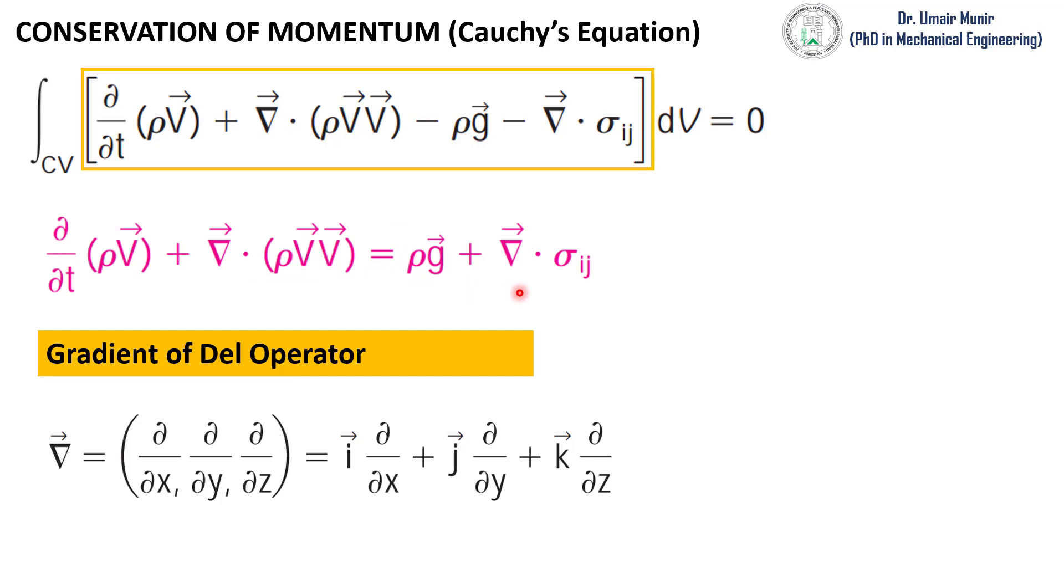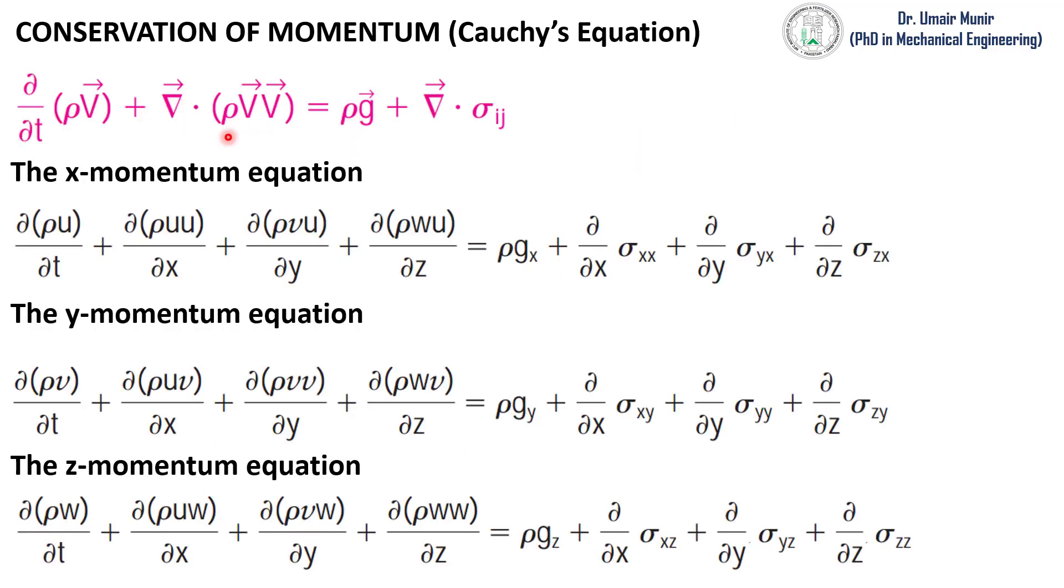In this equation, del is the gradient operator which is the divergence of a vector in x, y, and z direction. So we have now derived the momentum equation which is also called Cauchy's equation.